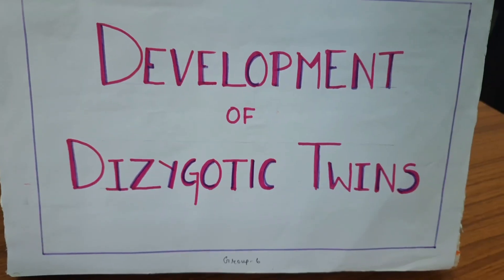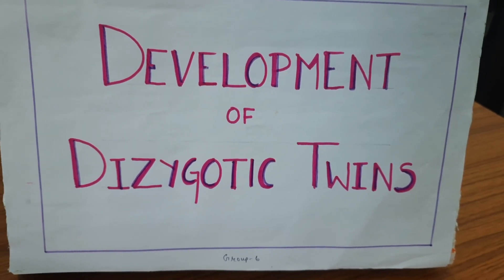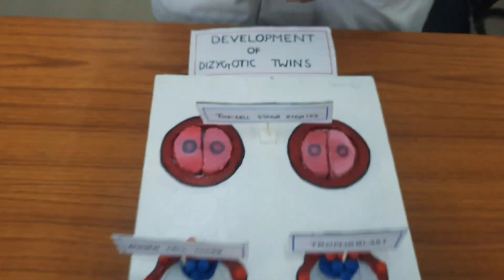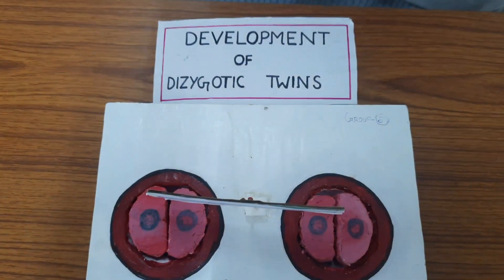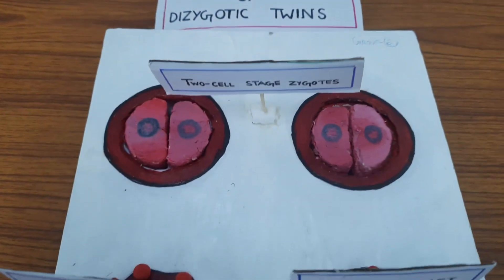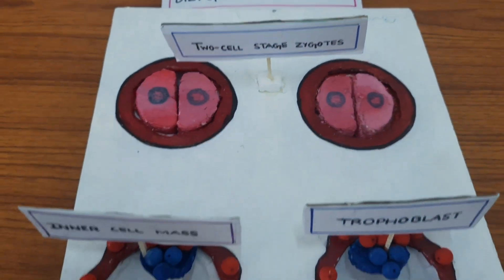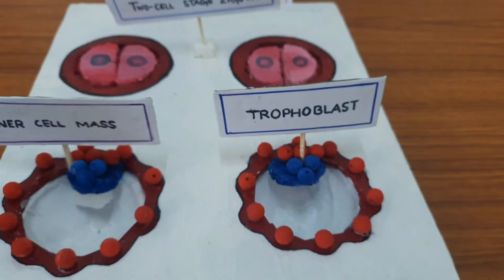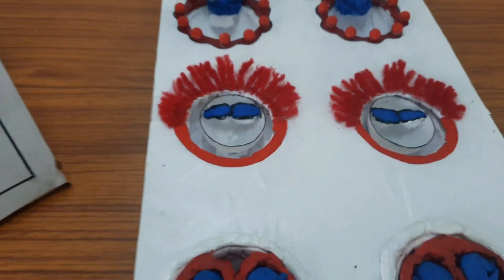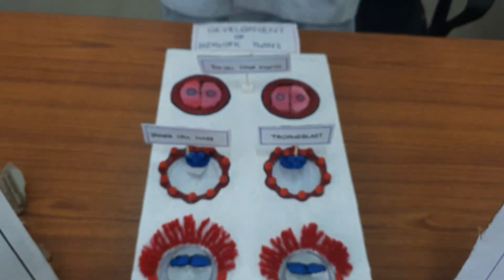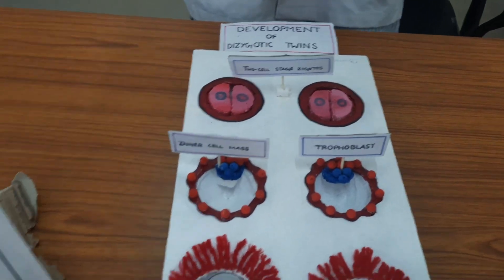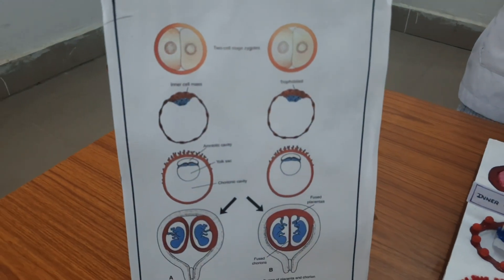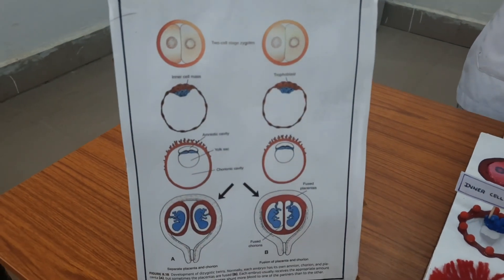Let's turn to Poonam. Development of the Dizygotic Twins. This is the model — development of the Dizygotic Twins. So here, this one is the two-cell stage Dizygotic. Inner cell mass, trophoblast — these are all the headings they have given here in the model.